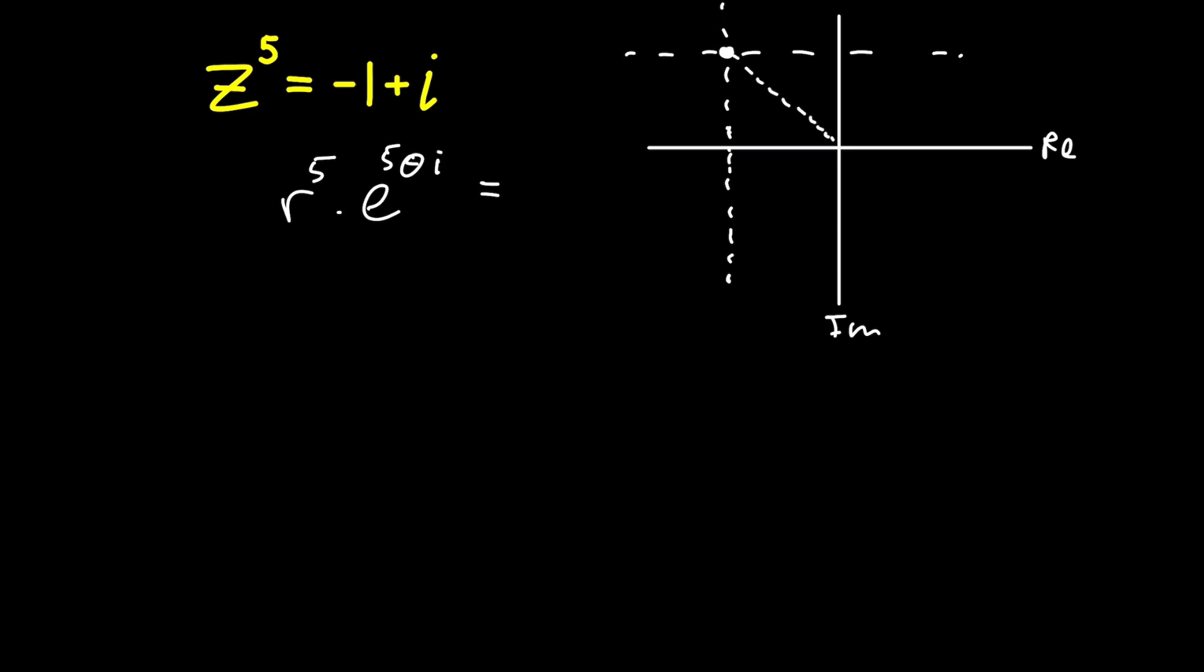You'll notice that it sits three-quarters of the way to the negative real axis, which means, if this angle is pi, which is 180 degrees, then it sits at three-quarters pi. So in other words, our argument now is going to be three-quarters pi plus two pi k.